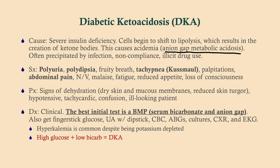DKA is often precipitated by something — either an infection, non-compliance with insulin, or the big problem of insulin being difficult to afford. Especially kids: they'll ration their insulin, which is not good. You may also see fruity breath, though that's such a dead giveaway they probably won't tell you that on the exam. Patients can get Kussmaul respirations — fast, deep respirations — which are a sign of acidemia and a very late manifestation. A lot of times they also have abdominal pain.